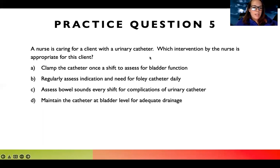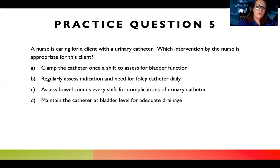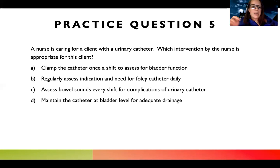Practice question five: a nurse is caring for a client with a urinary catheter. Which intervention by the nurse is appropriate for this client? This is not asking for most appropriate or best — it's just saying the patient has a catheter, what is appropriate? Think of this like true or false going down. Choice A says clamp the catheter once a shift to assess for bladder function. I don't remember hearing my professor say anything about clamping the catheter, so I'm going to keep going — I don't really like that one.